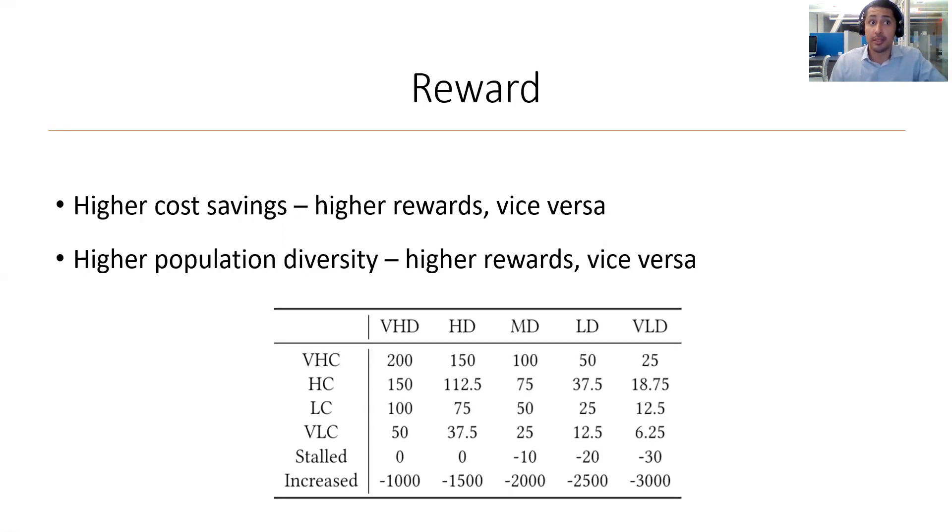The reward was then given off both states. If there was a high savings in cost, then a higher value for the reward would be given and vice versa. Likewise, if there was a high population diversity index, then the agent was rewarded more and again vice versa. Displayed is the table of the rewards for each possible state.